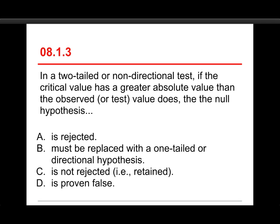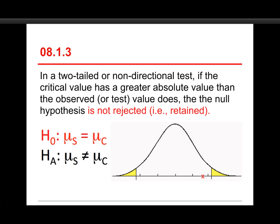So, this is a confusing question, and the reason I included it this way is because there are questions very similar to this on the departmental final, so you need to be able to work through the logic of what exactly is being asked for. The answer in this particular case is that if the critical value has a greater value than the observed test value, then the null hypothesis is not rejected.